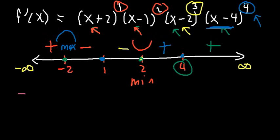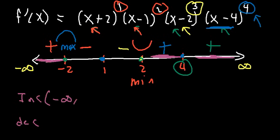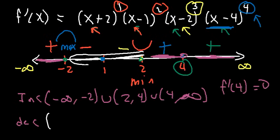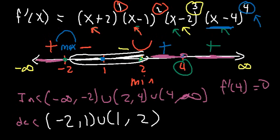The function is increasing when the first derivative is positive — so it's increasing from negative infinity to negative 2, union 2 to 4, union 4 to infinity. Keep in mind that at 4, f prime of 4 is 0, so there's a horizontal tangent line — it's neither increasing nor decreasing there, since the slope must be positive for the function to be increasing. The function is decreasing from negative 2 to 1 and from 1 to 2. That's how you find when a function is increasing or decreasing and how to find local maxima and minima using the first derivative. Thanks for watching.